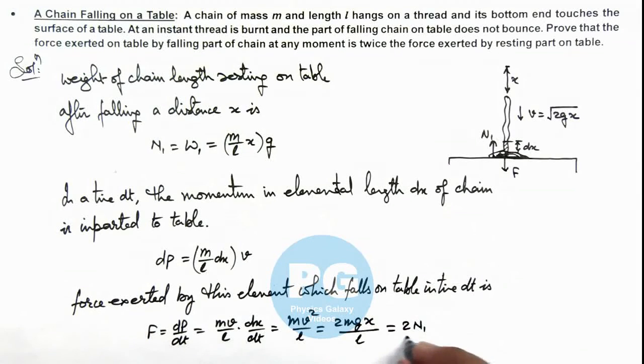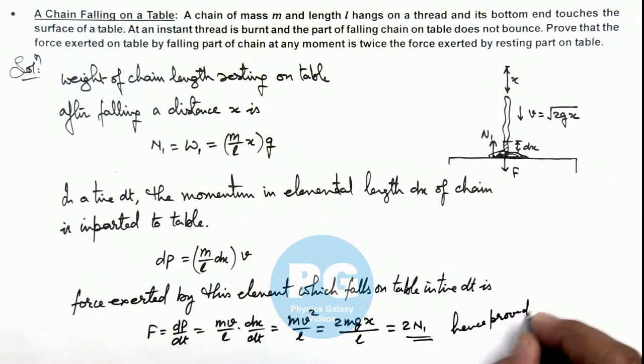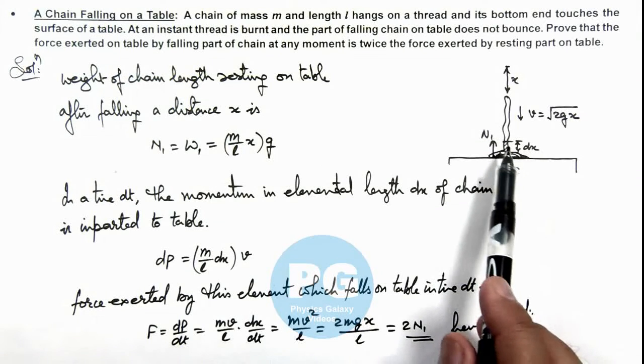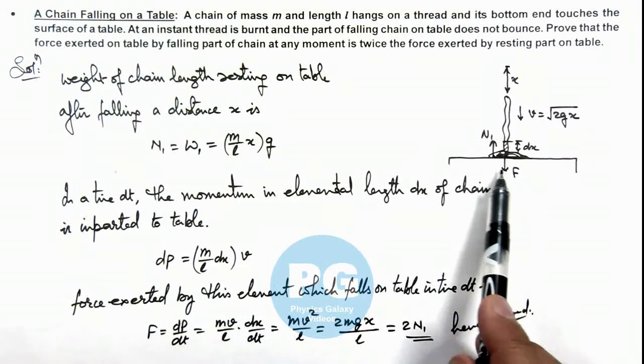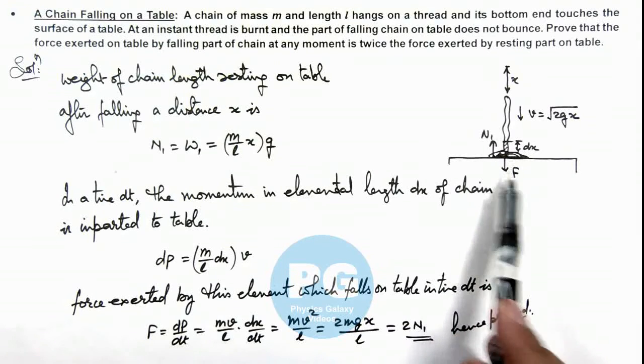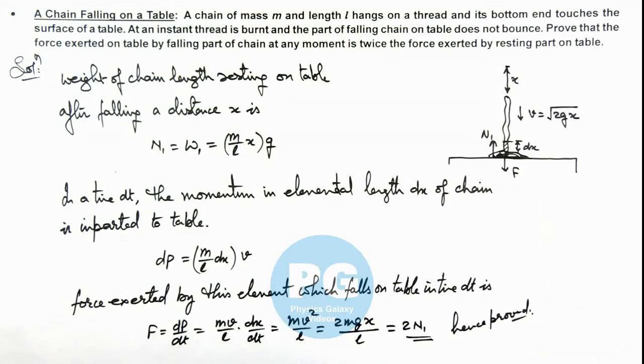So this was what we are required to prove, so we can write it hence proved. So this is the way we can calculate when a moving chain strikes a surface from where it is not bouncing, the amount of force exerted can be calculated by using this method.